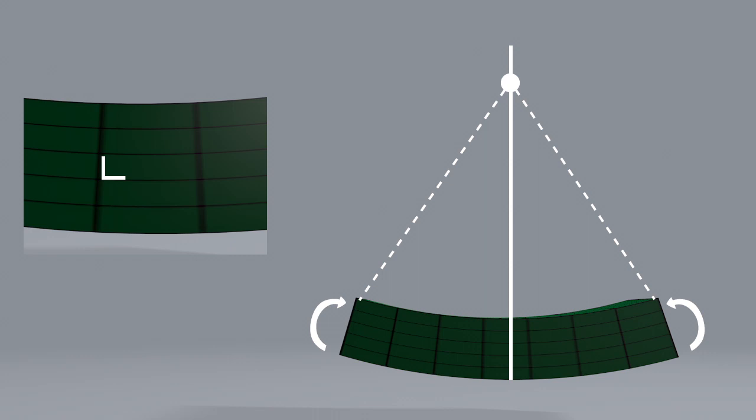Thirdly, sections originally perpendicular to the longitudinal axis remain plain and perpendicular. And number four, the beam only bends about the Z axis.